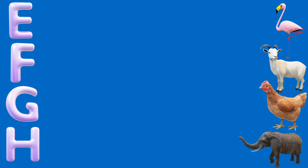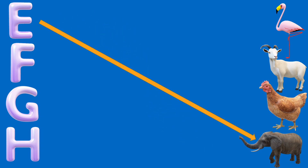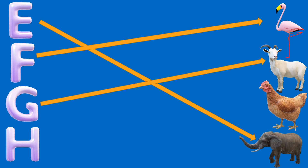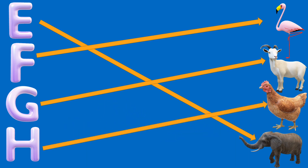Here you have 5 seconds to guess. Here we go. E is for elephant. F is for flamingo. G is for goat. And H is for hen.